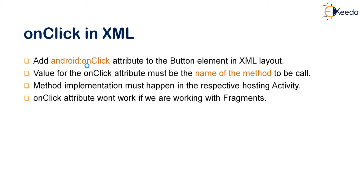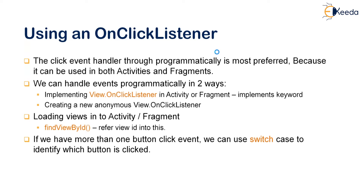The onClick attribute won't work when you are working with fragments. When you add an onClick attribute to a button inside a fragment, it's not going to work — that is a disadvantage. The other way is using the OnClickListener handler programmatically, which is most preferred because it can be used both for activities and for fragments. There are two ways: implementing the View.OnClickListener on an activity using the implements keyword, or creating a new anonymous OnClickListener inside the class.